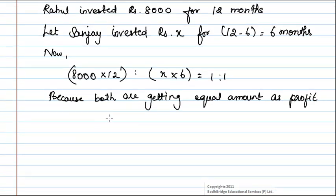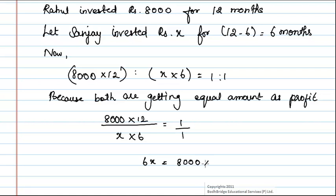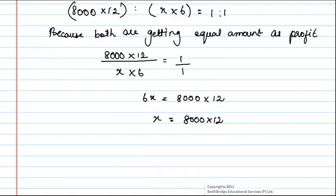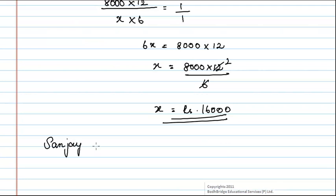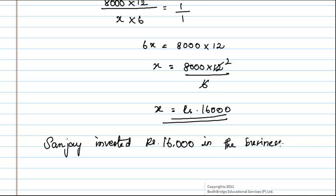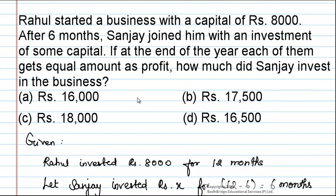We get 8,000 into 12 divided by X into 6 is equal to 1 by 1, which implies 6X is equal to 8,000 into 12. Therefore, X is equal to 8,000 into 12 divided by 6. On simplifying this, we get X is equal to rupees 16,000. Hence, Sanjay invested 16,000 rupees in the business, which is option A.